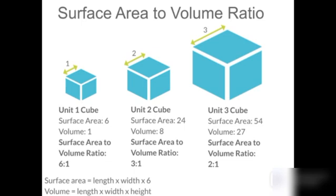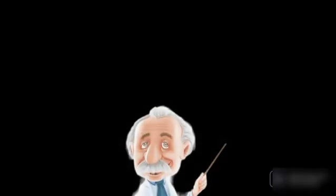For the first cube, we had a surface area of six and a volume of one, so the surface area to volume ratio was six to one — higher than that of the unit two cube, which has a ratio of three to one, because the surface area increased from six to twenty-four and the volume increased from one to eight. Underneath the diagram you can see calculations on how to get your surface area and your volume.